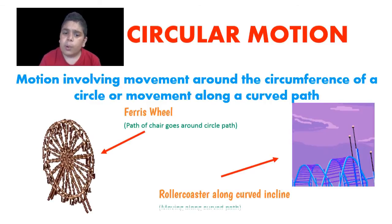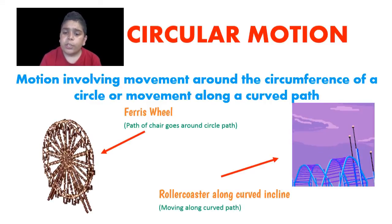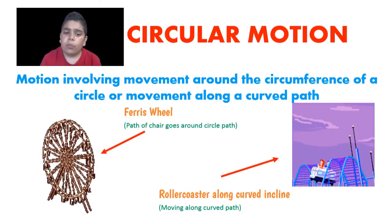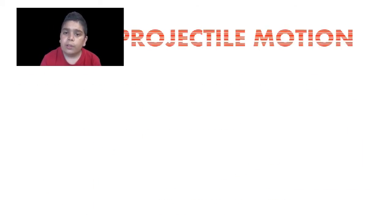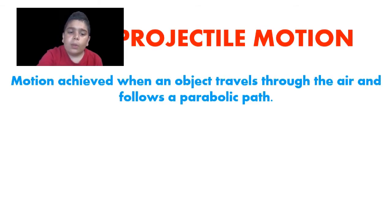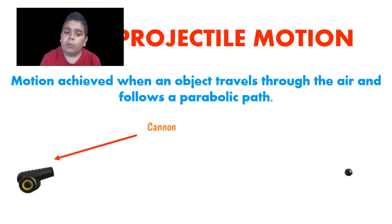The next type of motion is my personal favourite: projectile motion. Projectile motion refers to motion when an object travels with two motions, particularly vertical and horizontal motions. An example of this motion can be seen in cannons — the ball moves upwards and across from the cannon and follows a parabolic trajectory. This type of trajectory is unique to this type of motion.